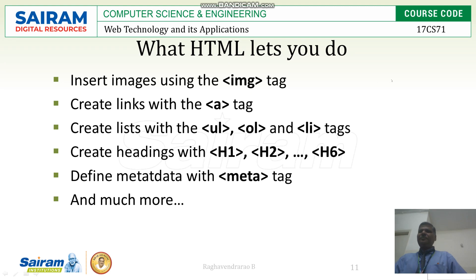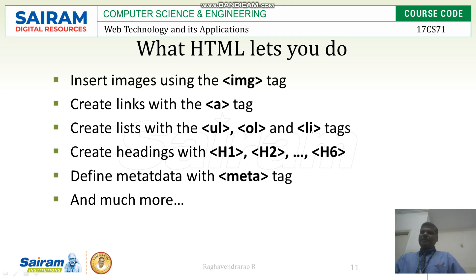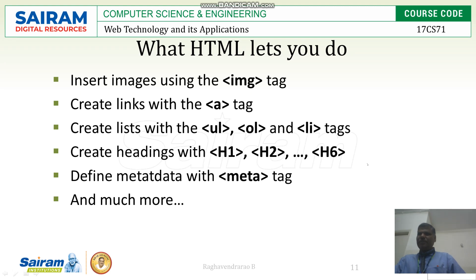There is an image tag. Anchor tag — which is just 'a' — creates hyperlinks. Then there are lists: UL is unordered list, OL is ordered list, and LI is the list element — individual elements are going to be present in that. Then there are headings H1 to H6. It is going to start with H1 and end with H1, then H2 starts and H2 ends, H3, and so on. Maximum you can have H6 tags. H1 is the big tag — the font will be big — and H6 is reduced.